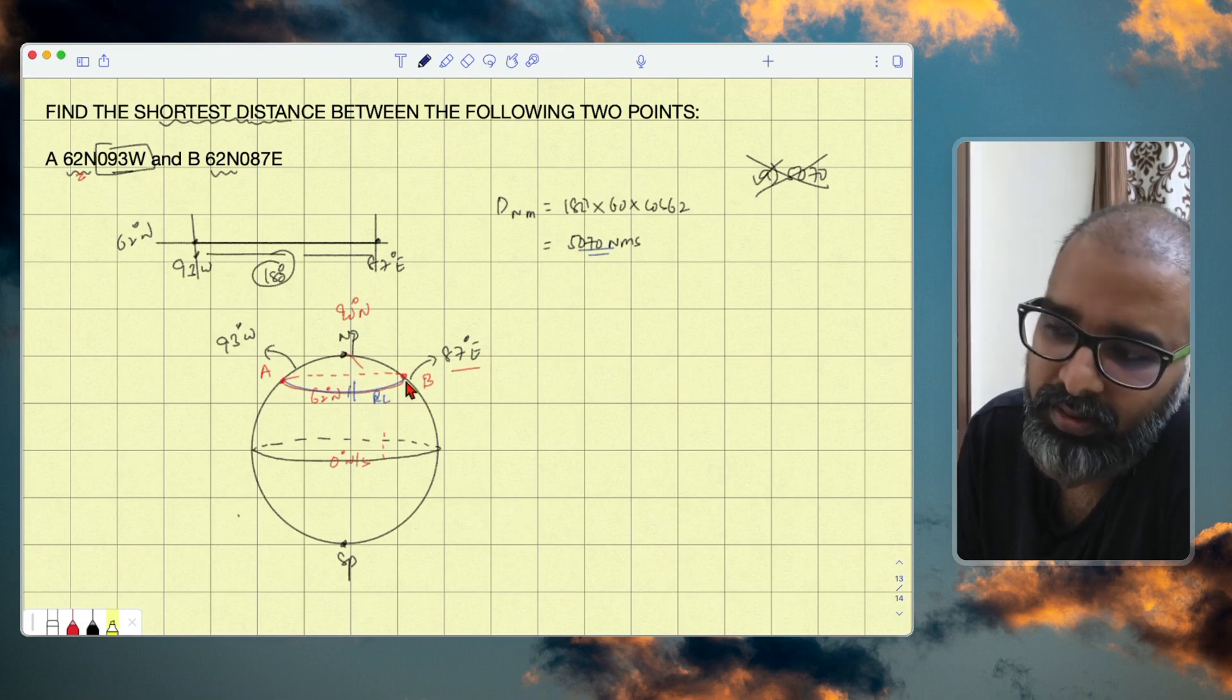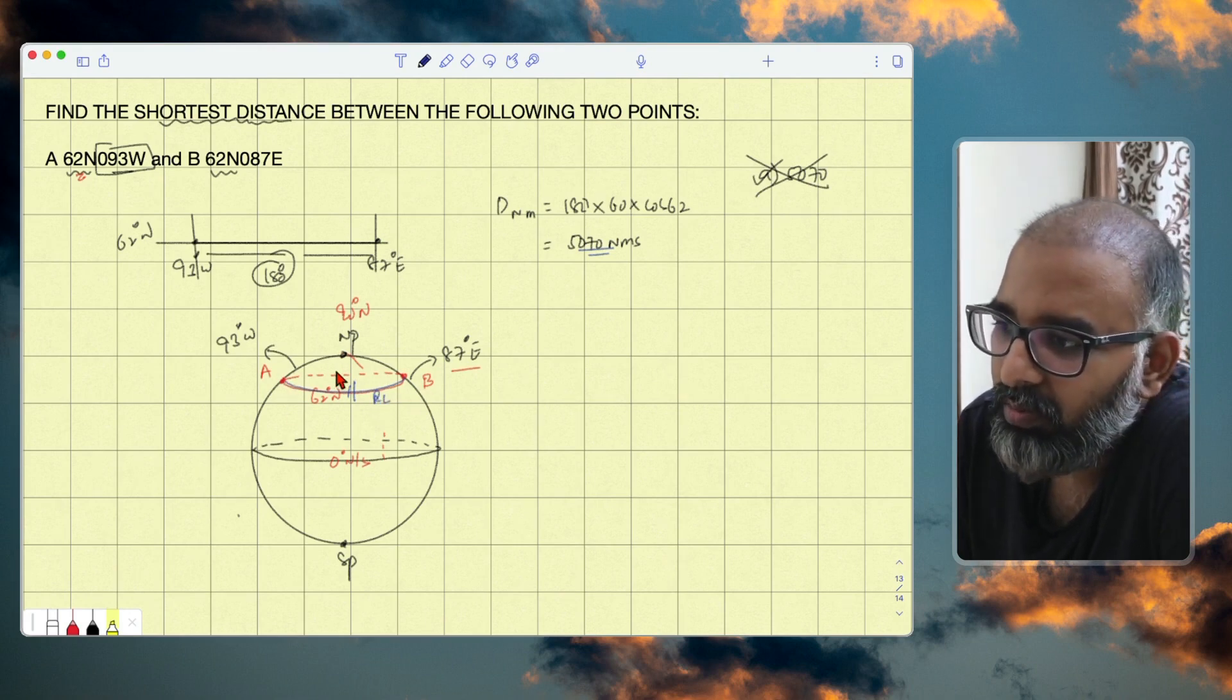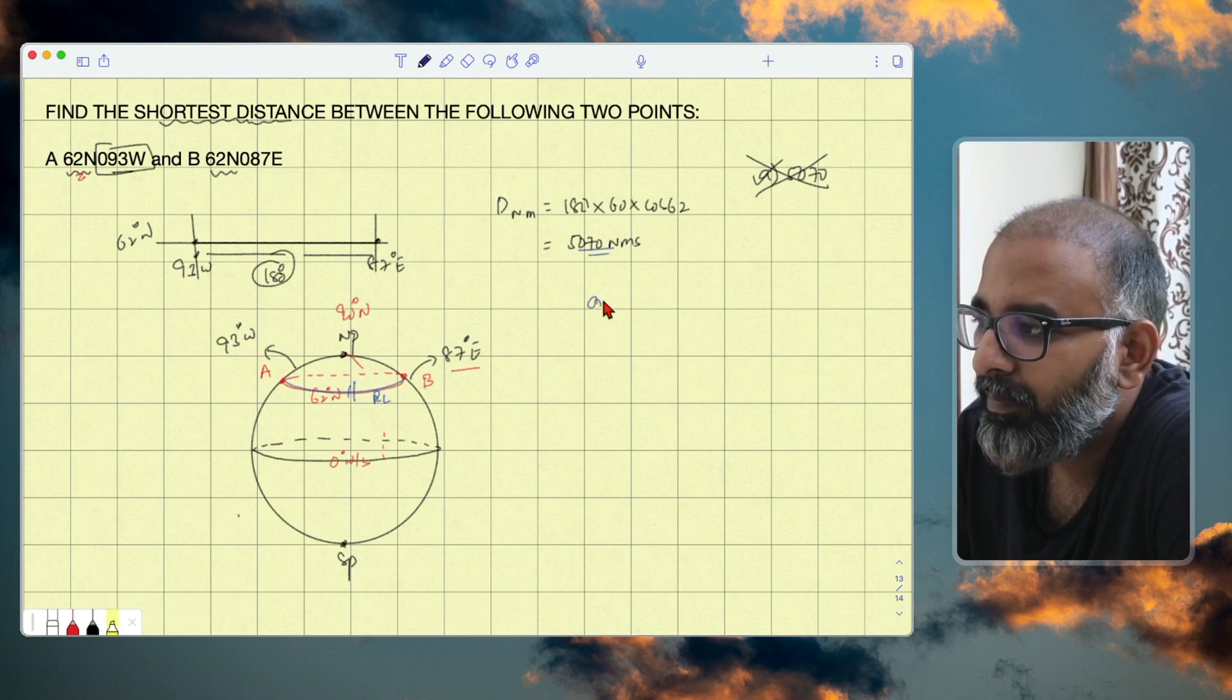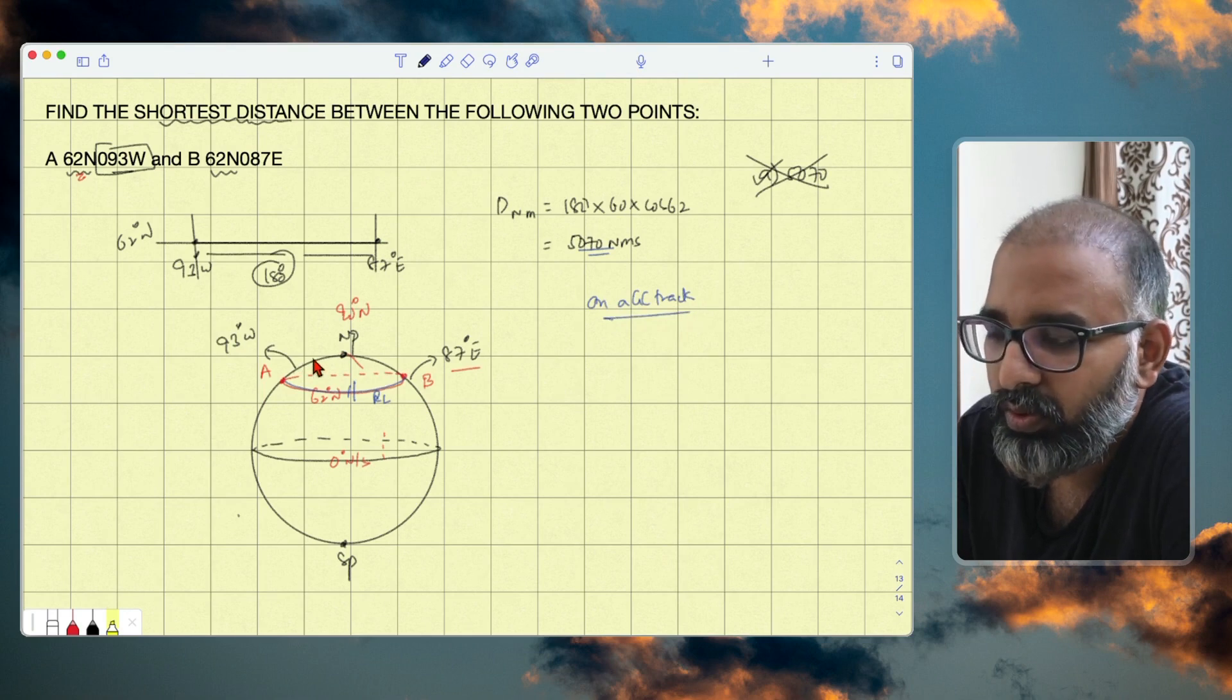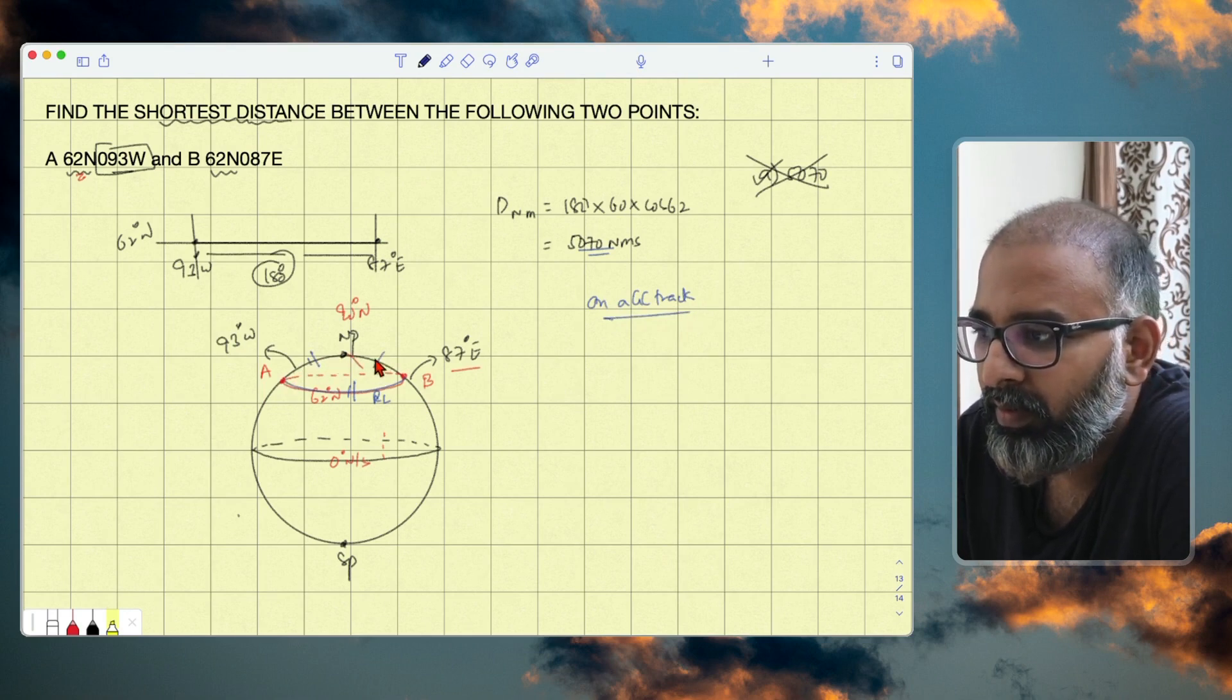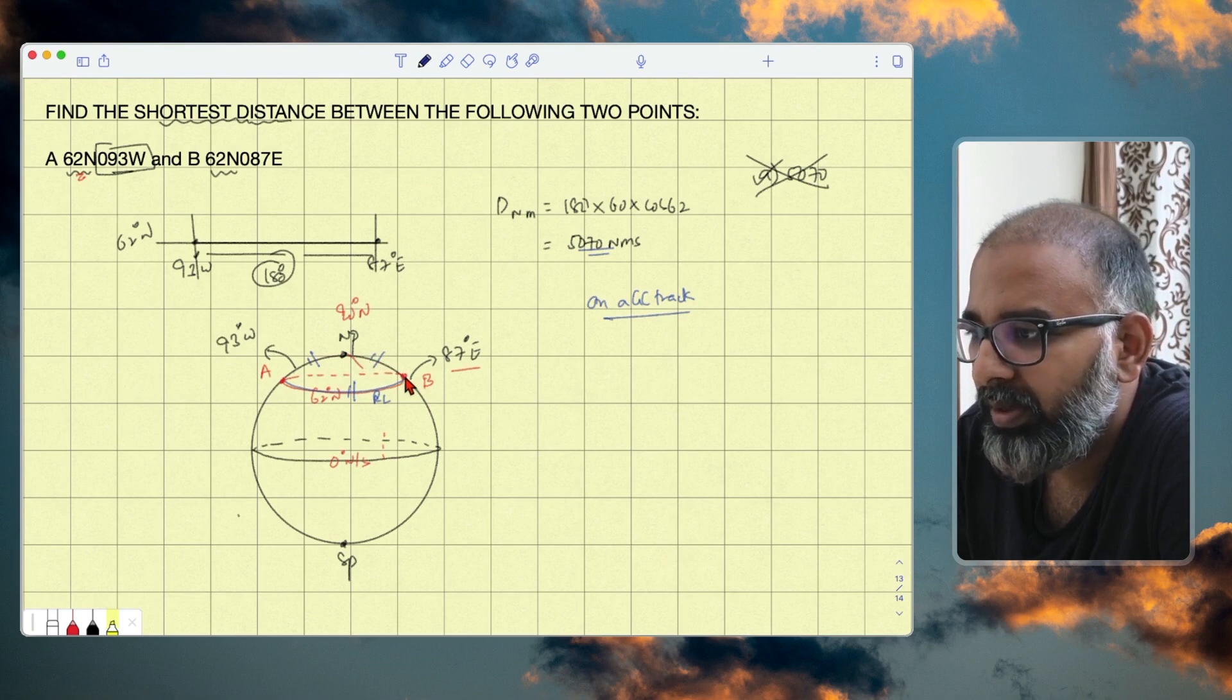Now parallel of latitude is a rhumb line, it is not the shortest distance. Flying from A to B should happen on a GC track, great circle track, to be the shortest possible distance. So you will fly like this to the north pole and then fly down from north pole to B. This will be the shortest distance.